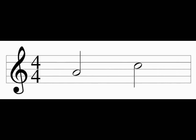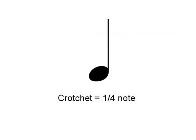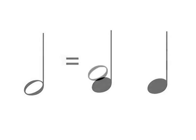Now a minim is equivalent to two crotchets. A crotchet is a quarter note, so two quarters equals a half. So in the time it would take you to play one semi-breve, you would play two minims, or you could play four crotchets, or you could play a minim and two crotchets — because it all adds up to one whole note.